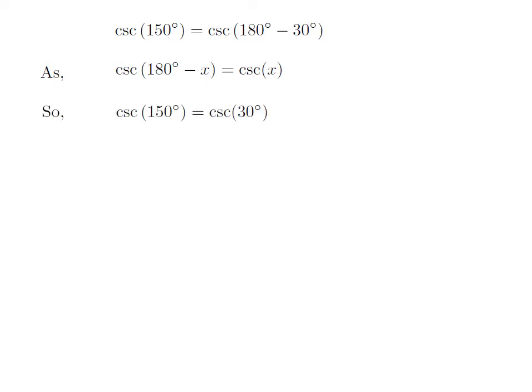Let us apply the above identity for cosecant of 150 degrees. Here, x is 30 degrees, so cosecant of 150 degrees is equal to cosecant of 30 degrees.